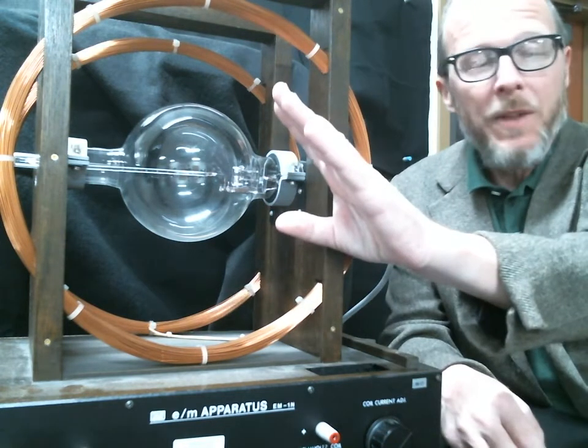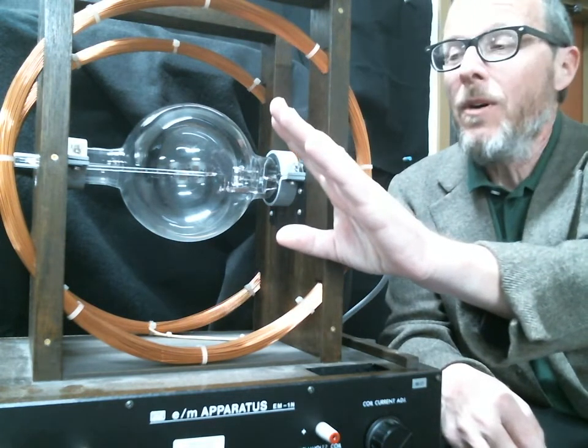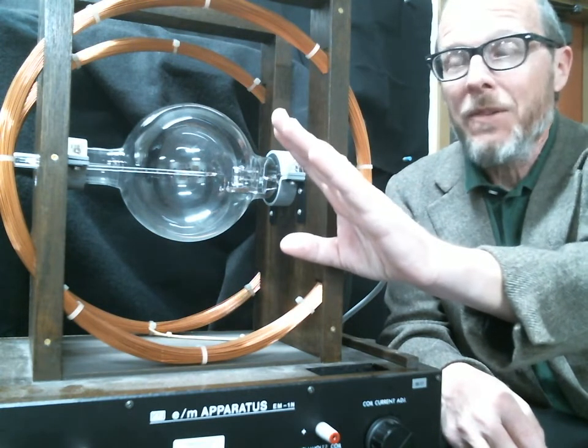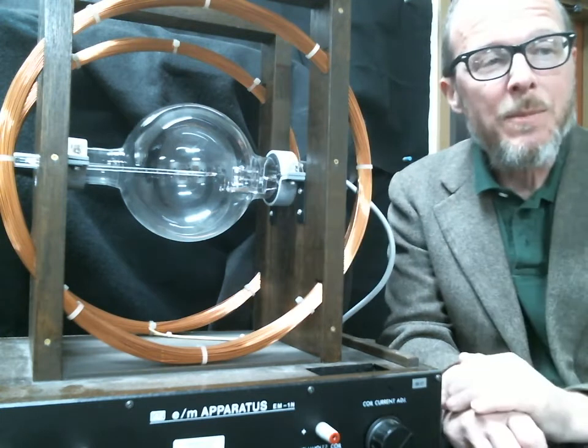So this tube has had almost all the air pumped out of it. There's just a small amount of hydrogen gas in there which allows us to get enough of a glow so we can actually see the beam when it's running.